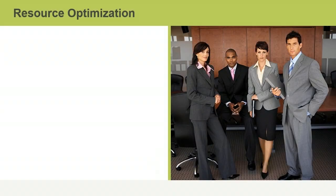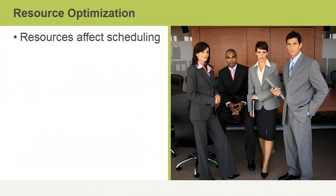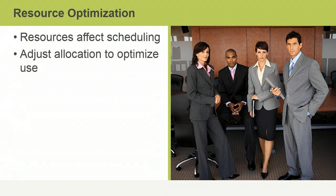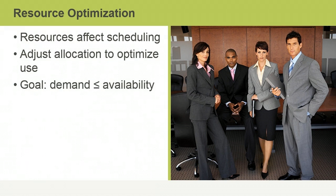This topic covers five tools and techniques used to develop the schedule. The first is resource optimization. The resources allocated for each activity can affect how activities must be scheduled. Resource optimization involves adjusting the resources allocated to activities to optimize both resource use and the schedule. The goal is to ensure that demand doesn't exceed availability, and you use this technique when resources have been over-allocated, are only available at specific times, or are limited in numbers.